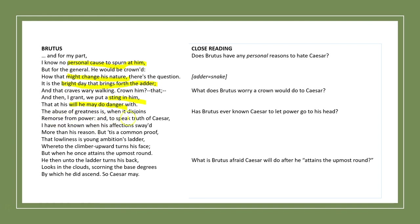'The abuse of greatness is when it disjoins remorse from power. And to speak truth of Caesar, I have not known when his affection swayed more than his reason.' So here he's pausing and telling the truth about Caesar — that as far as Brutus has seen, Caesar's affections have never swayed more than his reason. He's always put his reason first.